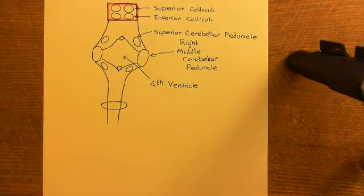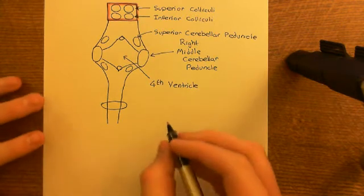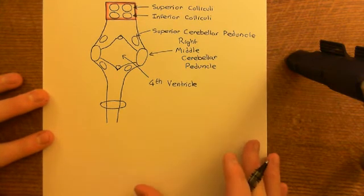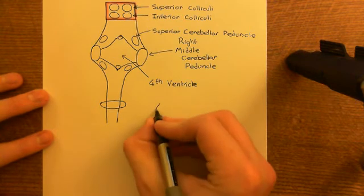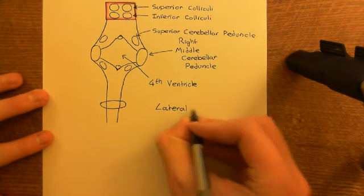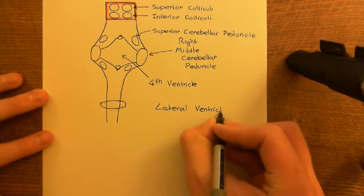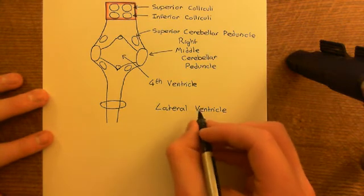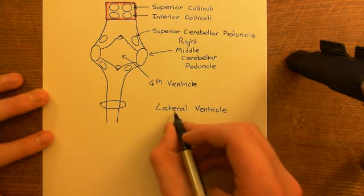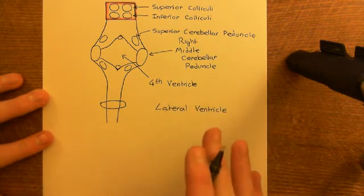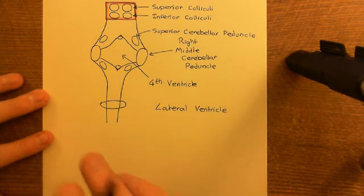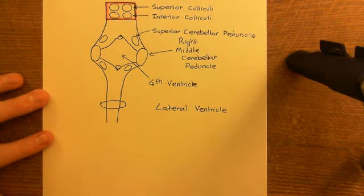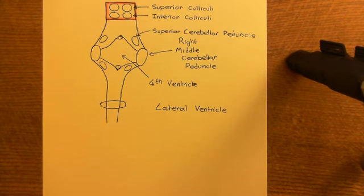Now let's go in the opposite direction and look at the first and second ventricles. You hardly ever hear people call them the first and second ventricles. Instead, they are called the lateral ventricles — you have a left lateral ventricle and a right lateral ventricle. They are completely symmetric, so it's unclear whether a definitive numbering has been assigned.